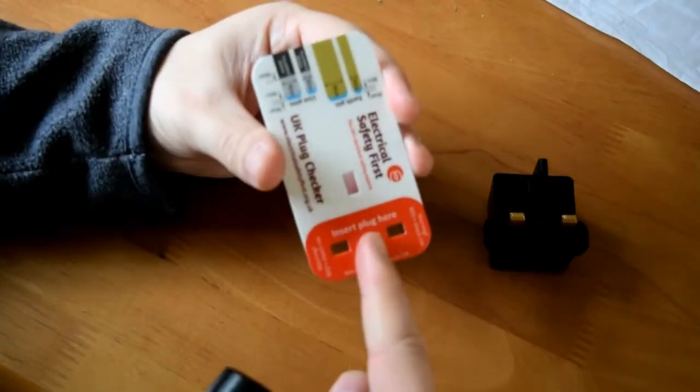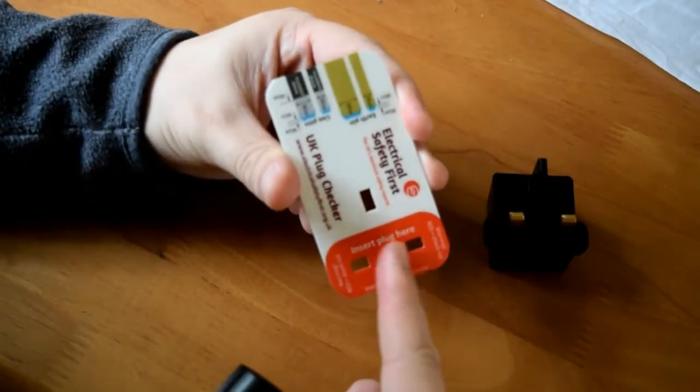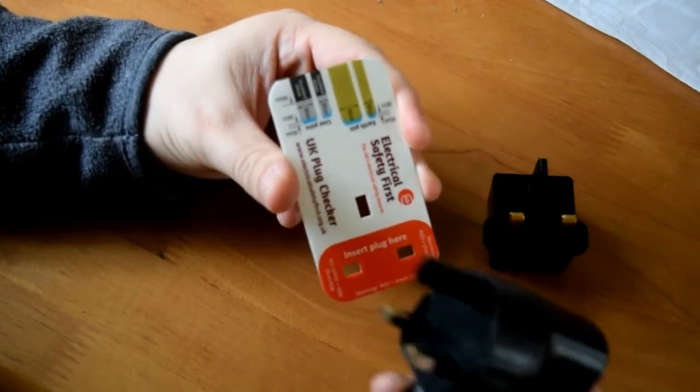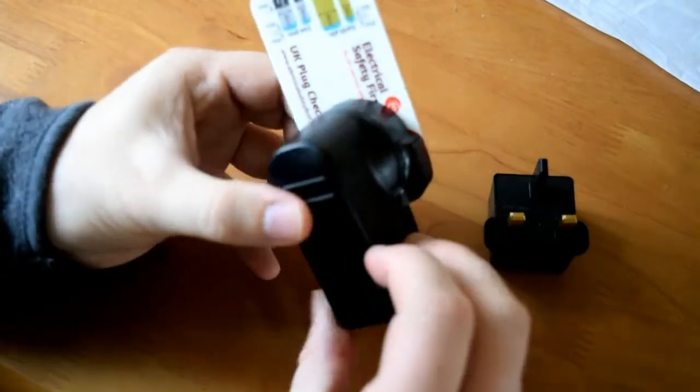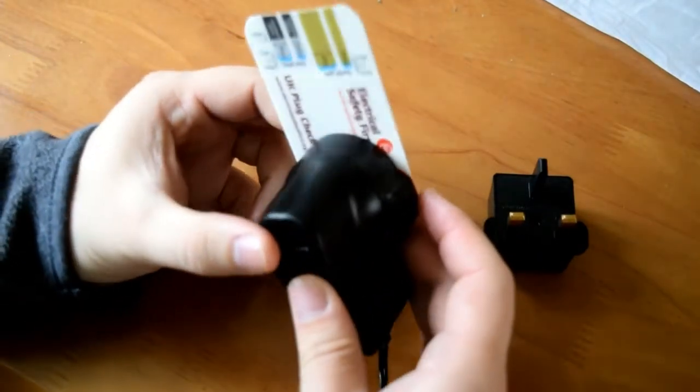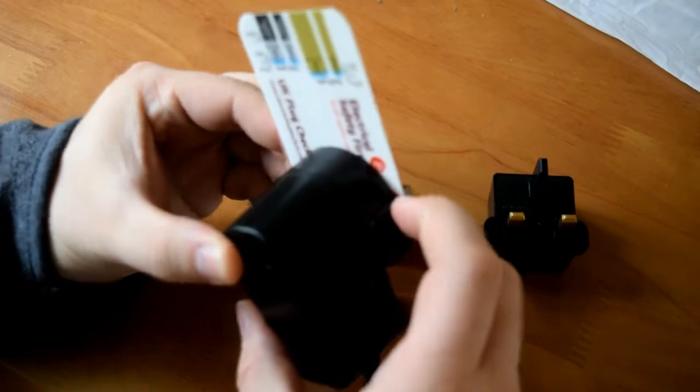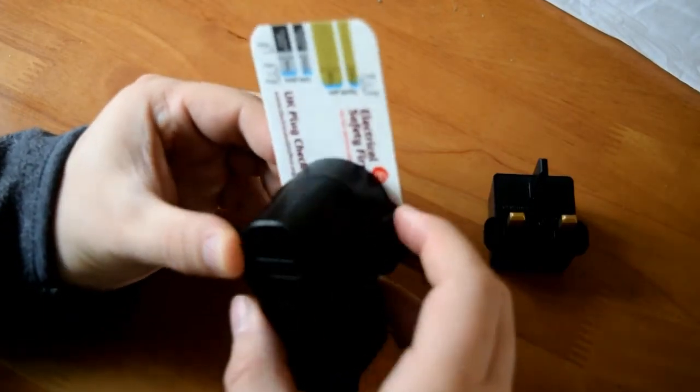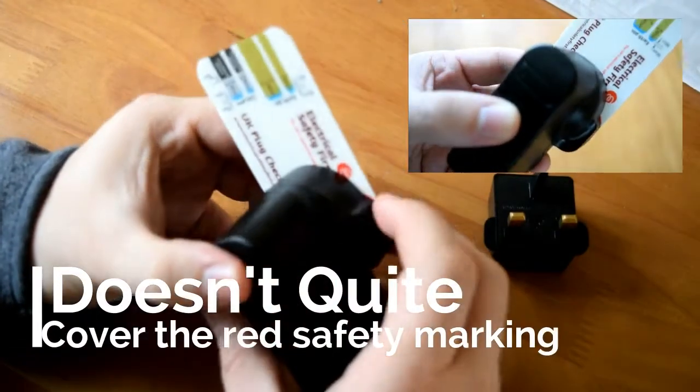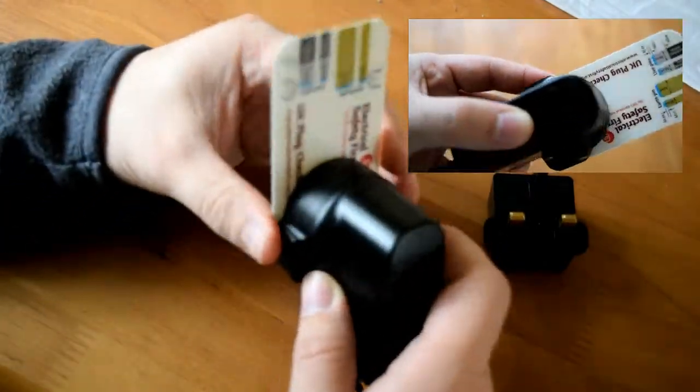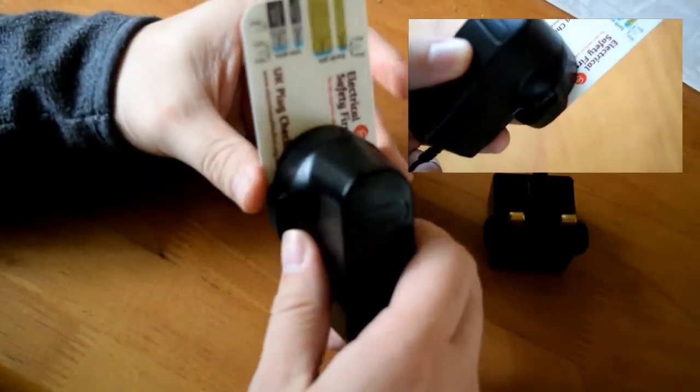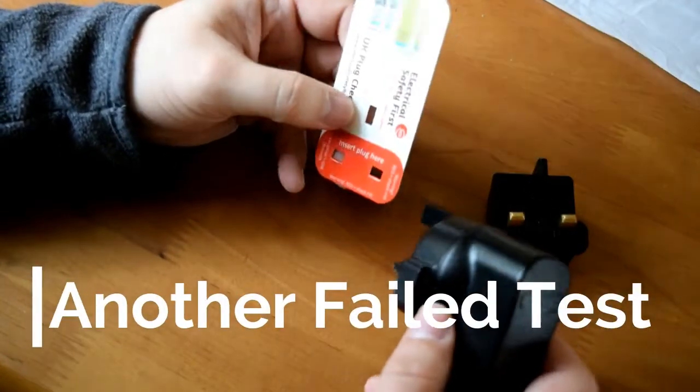So this red bit here, this should be covered up totally when I put the plug on it. Now yeah it pretty much covers the whole of the plug, but just in the corner there I'm not sure if you can see that, but it slightly exposes a bit of the red. So it kind of fails I'm afraid on that bit. But it's almost there.